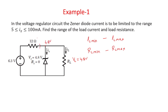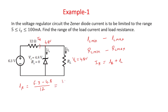Applying nodal analysis at this node, the current IR is entering the node while IZ and IL are leaving. So IR equals IZ plus IL. IR can be calculated by the potential difference divided by resistance: IR = (6.3 − 4.8) / 12 = 1.5 / 12, which gives IR = 0.125 ampere, or 125 milliampere.